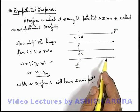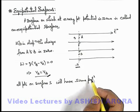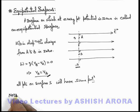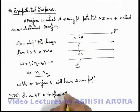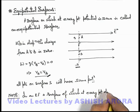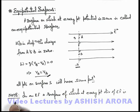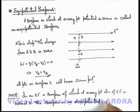In an electric field, if we consider any surface which is perpendicular to the electric field at every point, it can be regarded as an equipotential surface. To note: in an electric field, a surface at every point of which the direction of the electric field is normal to the surface is an equipotential surface.